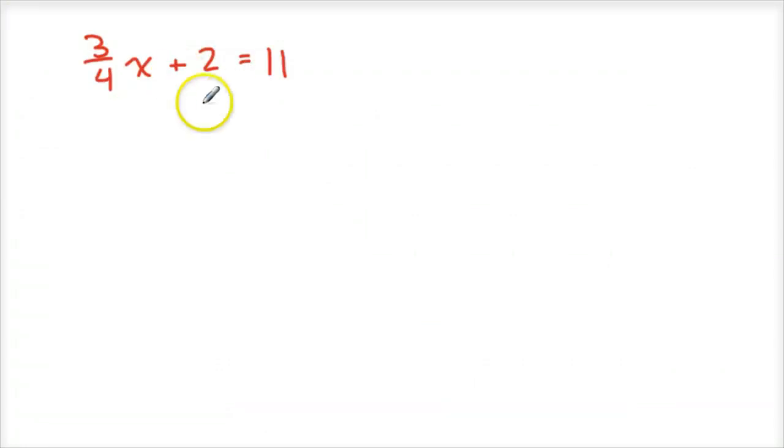The next one, we have a fraction. I'm just going to throw a fraction in there, but that's no big deal. Same thing, isolate the x. So here I'm going to subtract two from each side. And so now I have three fourths x equals eleven minus two, which is nine.